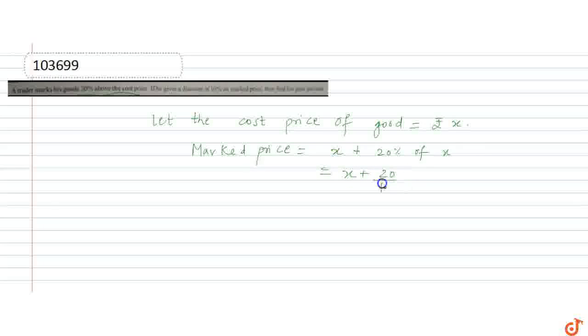So X plus 20 upon 100 into X. The zeros will cancel out, 2 and 10 will cancel out. So it is X plus X upon 5. Taking LCM here, 5X plus X, which is 6X upon 5. So we have the marked price.